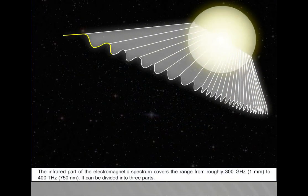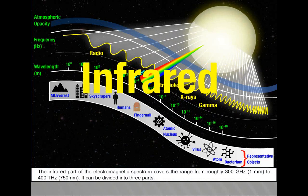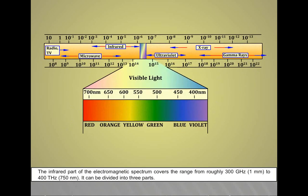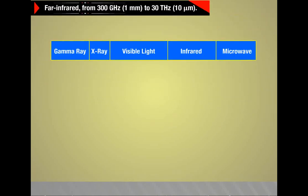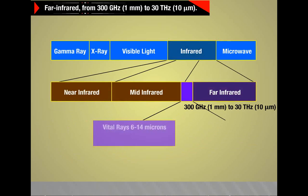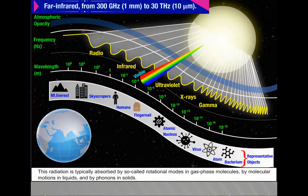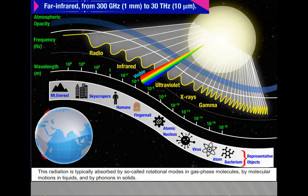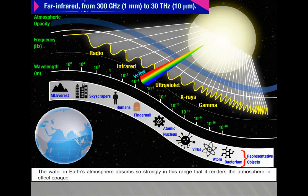The infrared part of the electromagnetic spectrum covers the range from roughly 300 GHz (1mm) to 400 THz (750nm). It can be divided into three parts. Far infrared from 300 GHz (1mm) to 30 THz (10 micrometer) - the lower part of this range may also be called microwaves. This radiation is typically absorbed by so-called rotational modes in gas phase molecules, by molecular motions in liquids, and by phonons in solids. The water in Earth's atmosphere absorbs so strongly in this range that it renders the atmosphere in effect opaque.